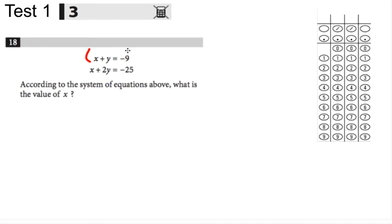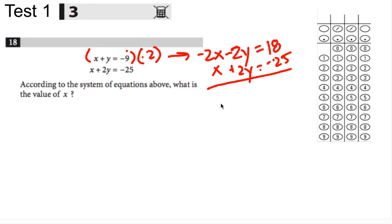I guess what I would probably do is multiply this top equation by negative 2 and get negative 2x minus 2y equals positive 18, and then I'd have x plus 2y equals negative 25. When I add straight down, I'd get negative x plus nothing is negative 7, so x is 7, and that's great.